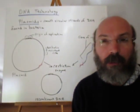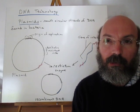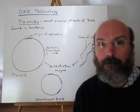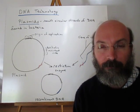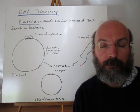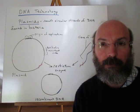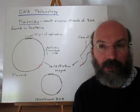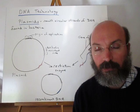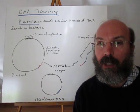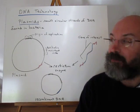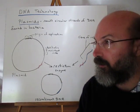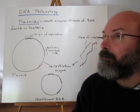DNA technology are methods that are used to study and manipulate DNA. These can be used to produce recombinant DNA — recombination of DNA from two different organisms. And one way that this is done is with plasmids.